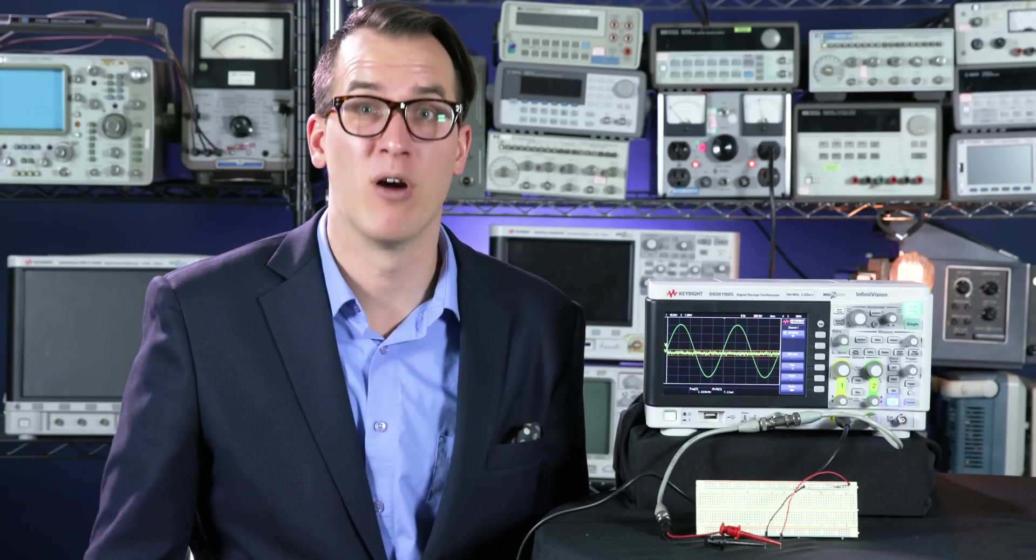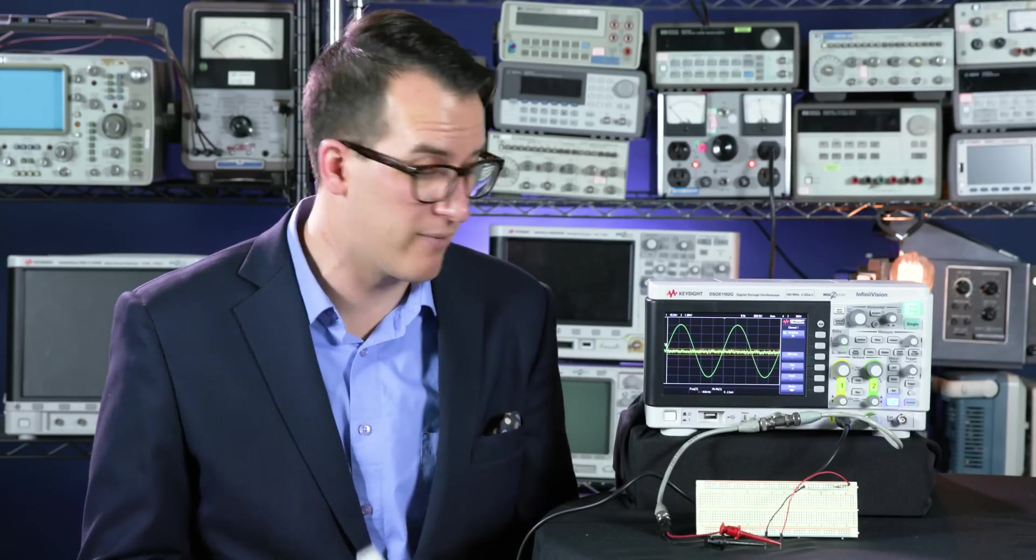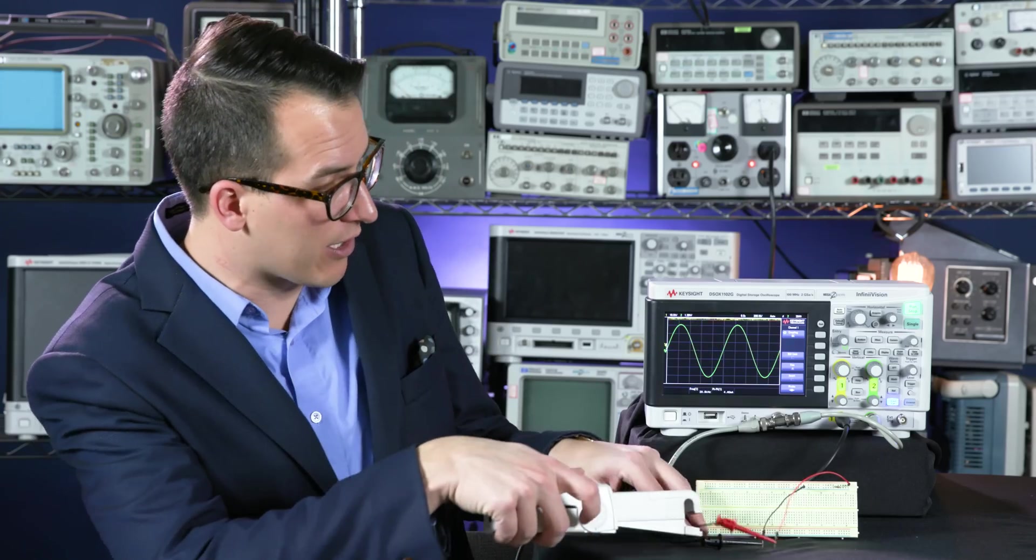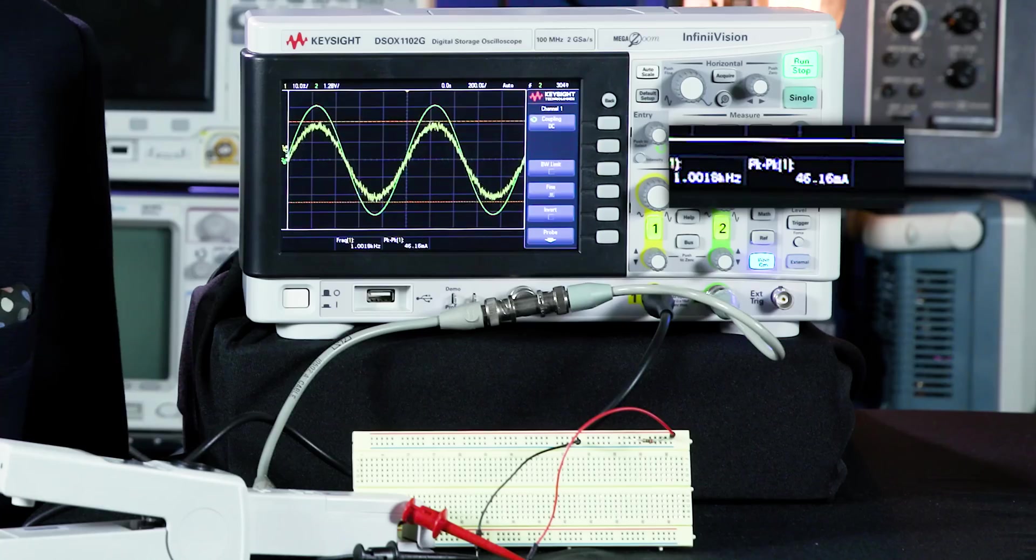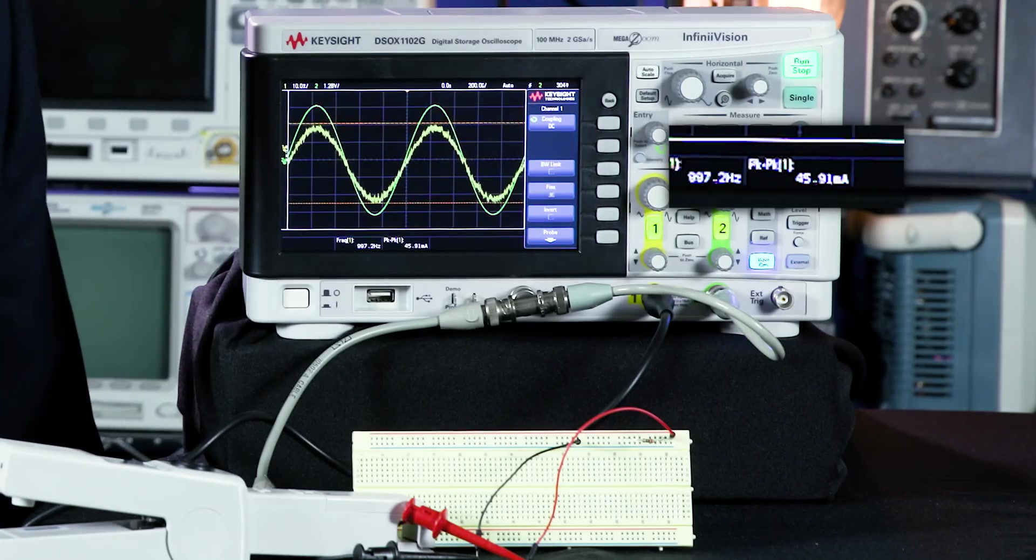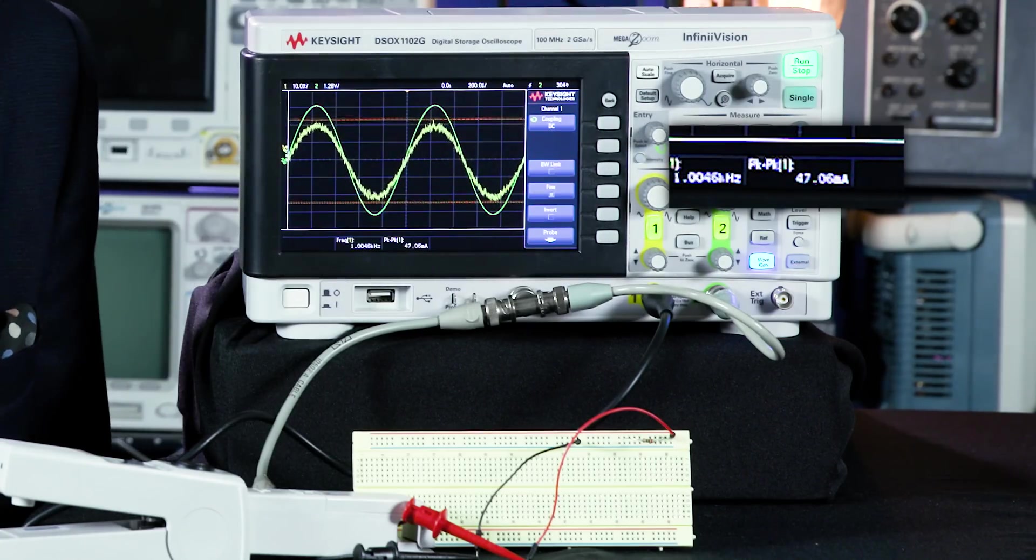I have the function generator of my scope outputting a 10-volt peak-to-peak sine wave. And if I take my clamp-on current meter, we can see how much current is flowing through this 200-ohm resistor. Looking at my measurement, I'm seeing about 46 milliamps of current flowing through this resistor.